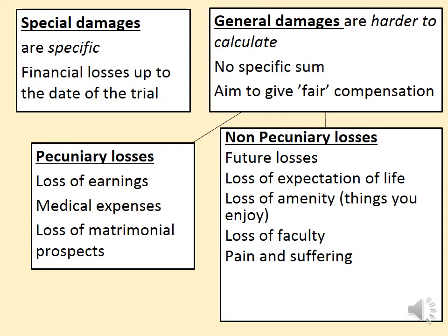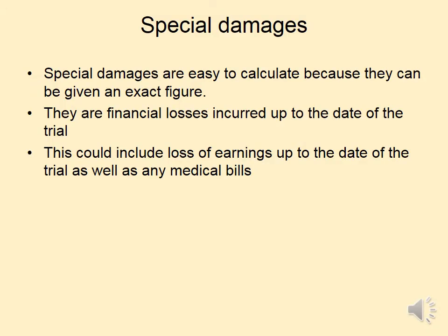Let's look at the structure of damages in general. Special damages cover specific losses up to the date of the trial and are easy to calculate because they're financial. General damages are harder to calculate because they have no specific sum. We also need to think about pecuniary losses — to do with financial and monetary losses — and non-pecuniary losses, which are non-financial losses. Special damages include loss of earnings up to the date of the trial as well as any medical bills, including if the claimant has decided to go privately.